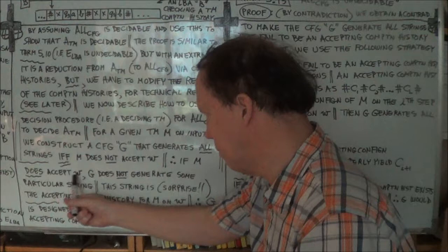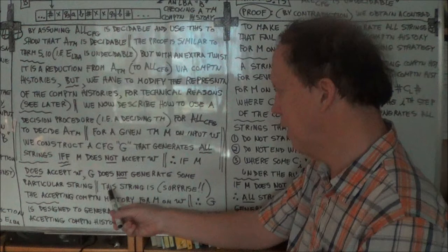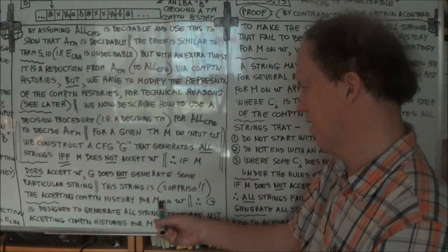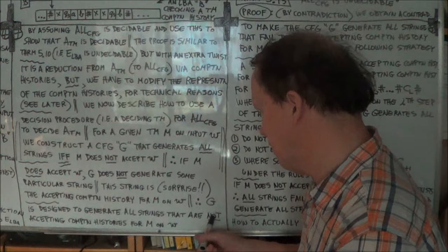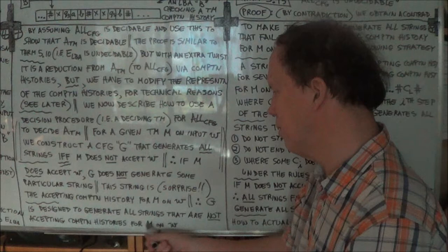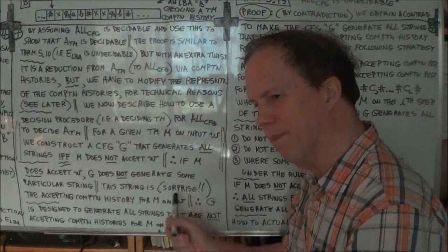So if M does accept W, G does not generate some particular string. And here's the surprise: let that string be the accepting computation history. That's the trick — the heart of the theorem. G is designed to generate all strings that are not accepting computation histories for M on W.